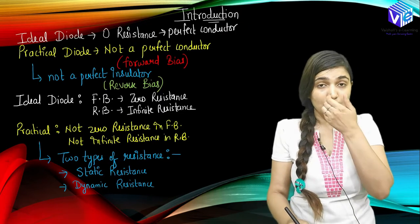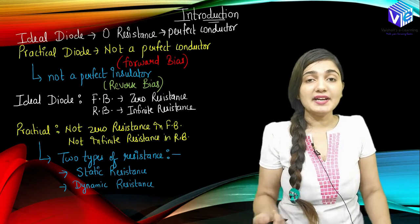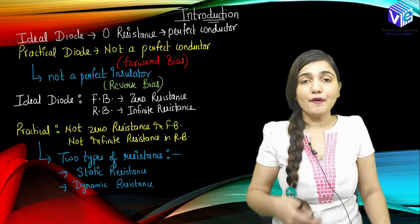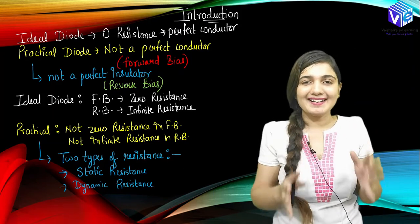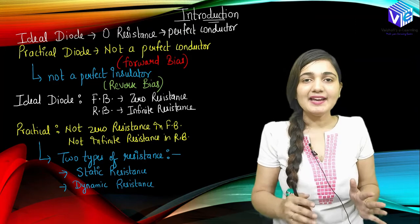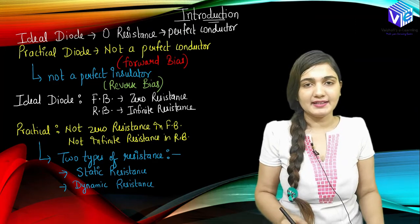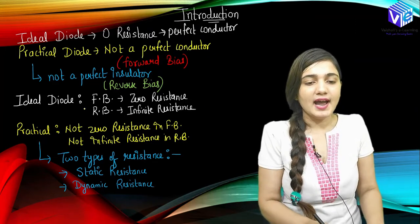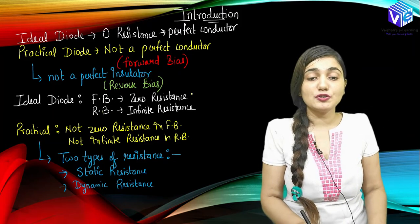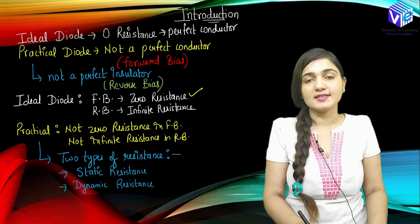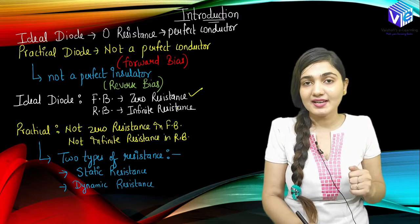First of all, we are going to see what kind of diode we are having — ideal diode or practical diode. Ideal diodes exist in theory only. So what is the difference between the ideal and the practical diode? The ideal diode in the forward bias condition gives zero resistance, but we know the intrinsic electric field is there.